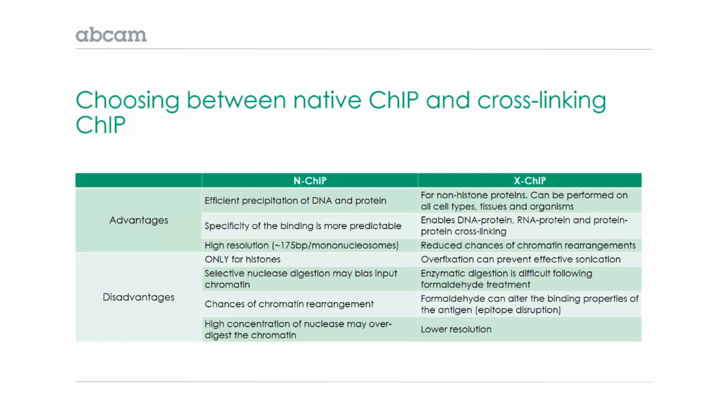There are, of course, several disadvantages of cross-linking ChIP, including the fact that overfixation can prevent effective sonication, enzymatic digestion won't be possible after formaldehyde treatment, formaldehyde can alter the binding of the antigen, and it has a lower resolution than native ChIP, since you can't use micrococcal nuclease for digestion. Hopefully, this will help determine if native or cross-linking ChIP is more appropriate for your experiment.